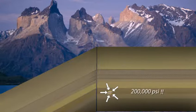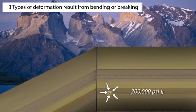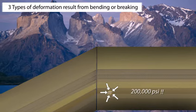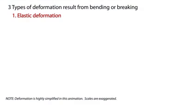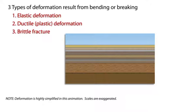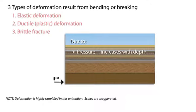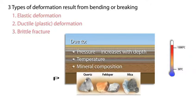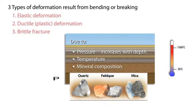In response to extreme stress, rocks bend and/or break through a process called deformation. The following factors control whether the deformation is elastic, plastic, or brittle: high pressure deep in Earth inhibits breaking; high temperatures deep in Earth make rock more flexible; and the minerals making up some rocks make them more flexible than others with a different mineral makeup.